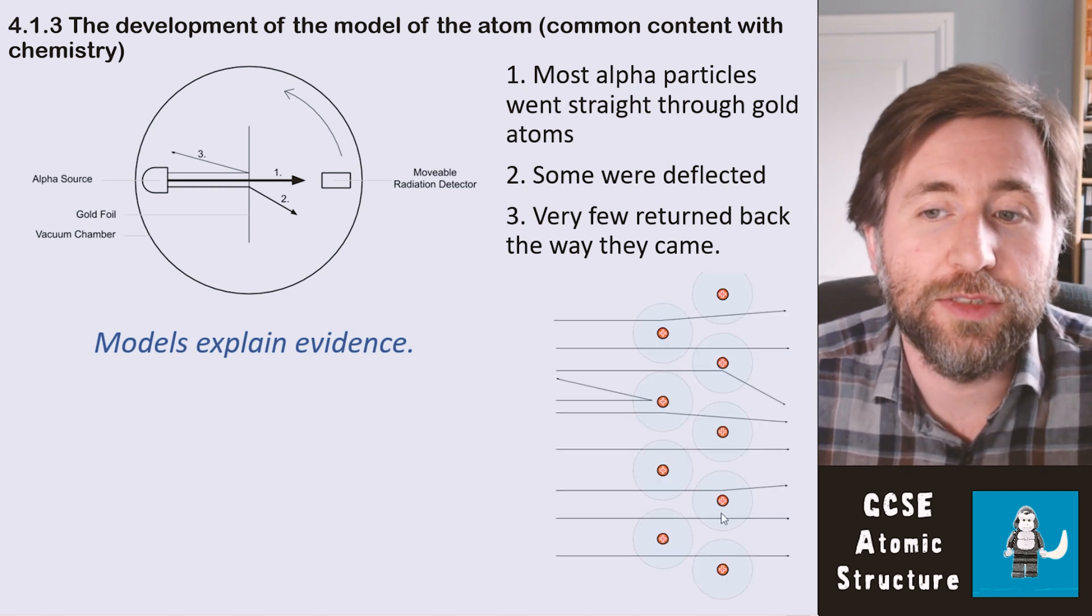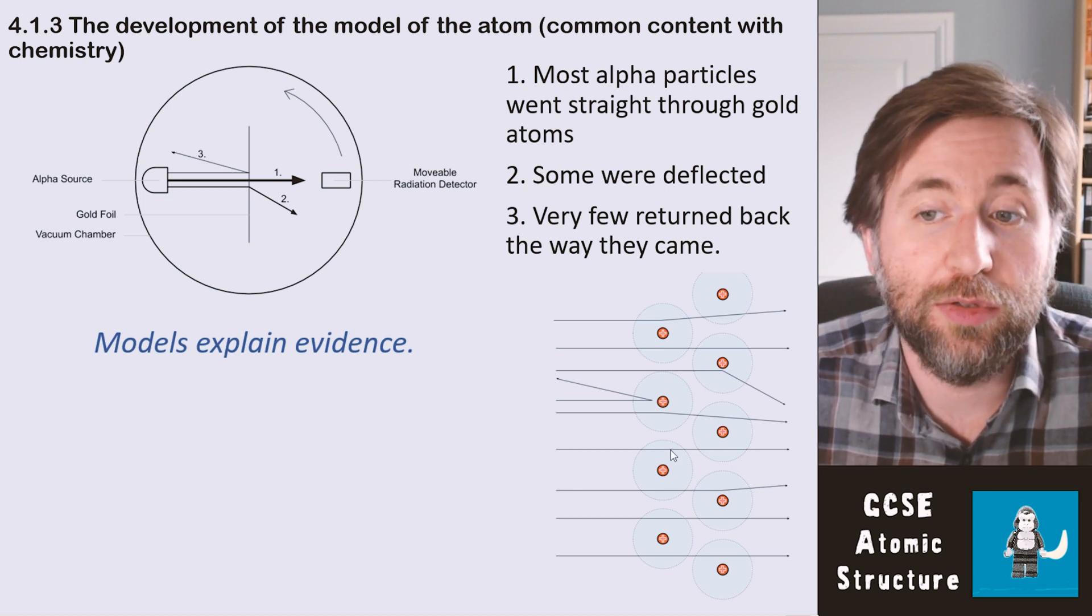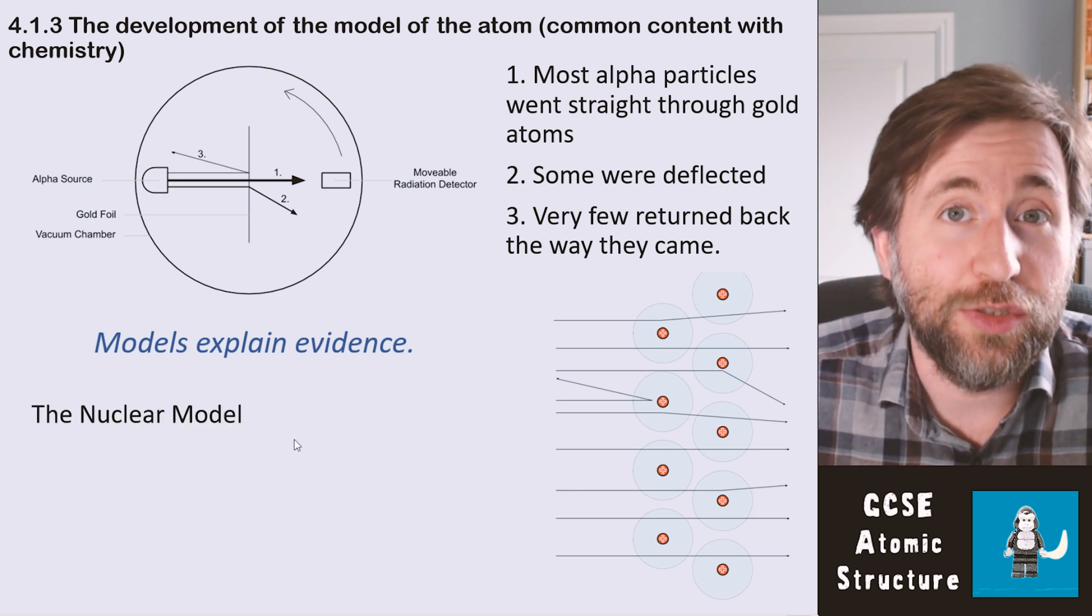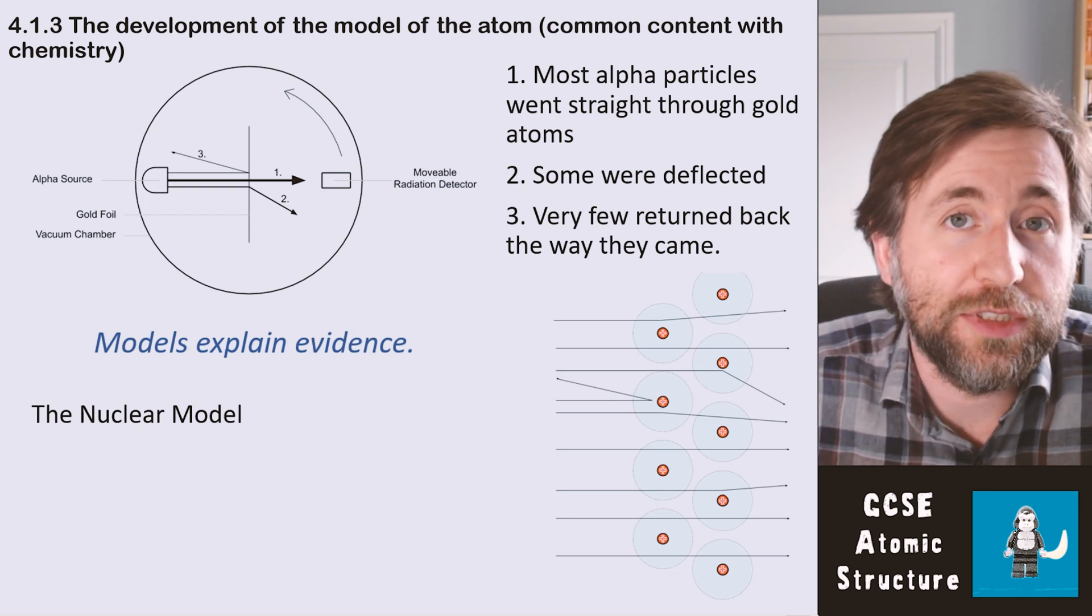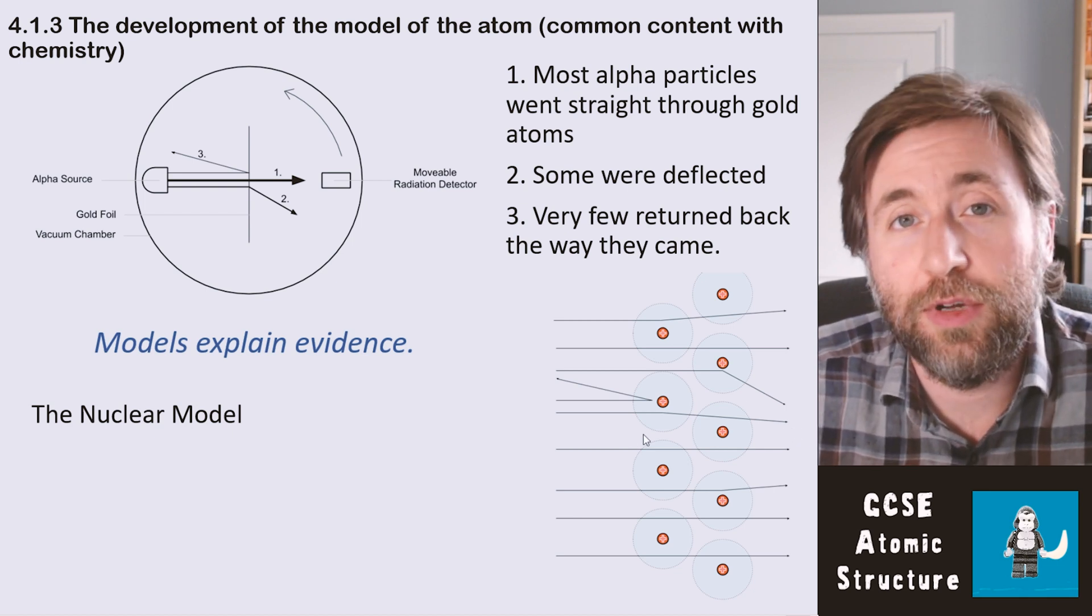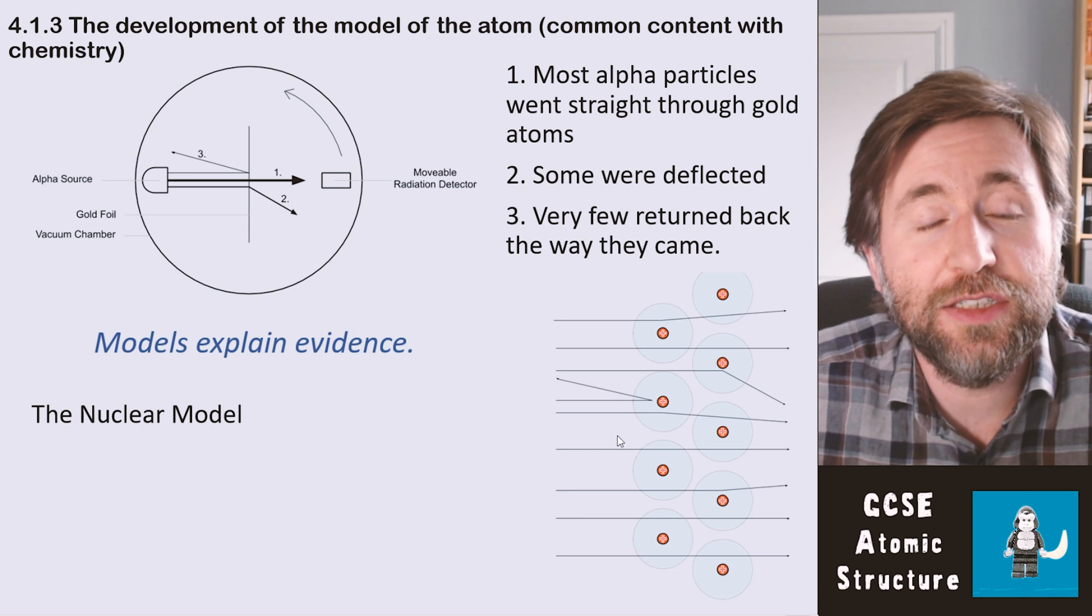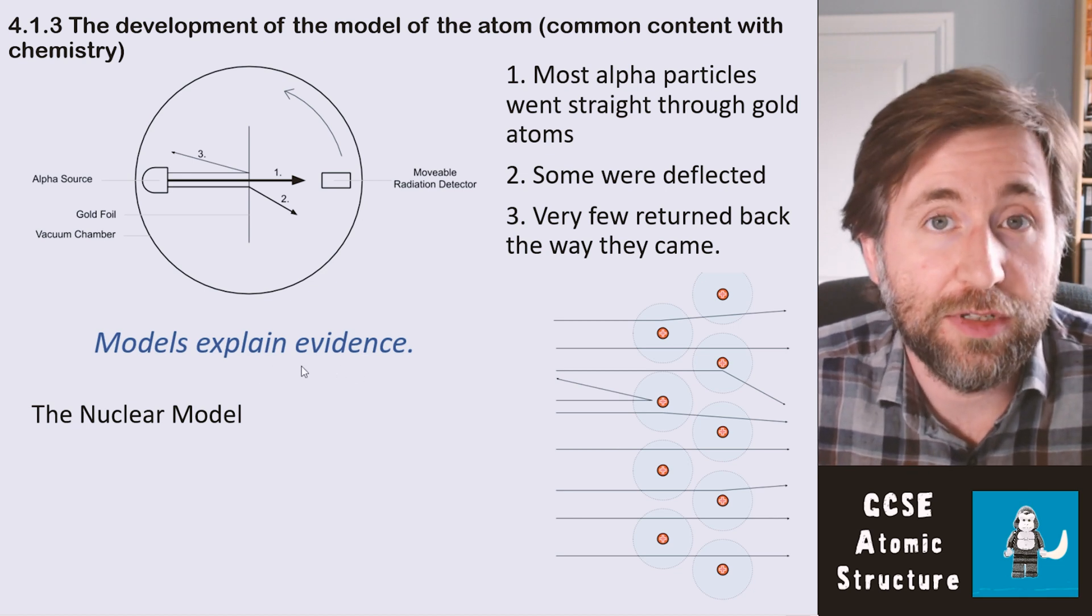If we could imagine zooming in on some of those atoms and some of those paths, we would have something that maybe looked like this. This is the nuclear model. The red positive points here in this diagram are the nuclei that Rutherford added to the model. He changed the plum pudding model because it didn't fit with the evidence that he now had.